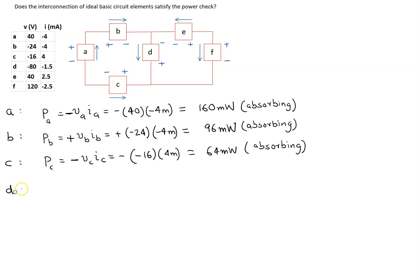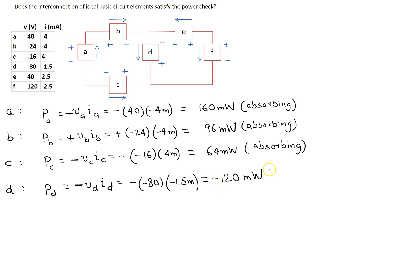Let's now look at element D. For element D, the power is the product of voltage and current. The reference current in element D is entering the terminal marked negative. So we use the power formula with a negative sign. Substituting the values: minus 80 and minus 1.5 milliamps. We have three negative signs here, so when you simplify, the final answer is a negative value. This negative value means element D is supplying power.